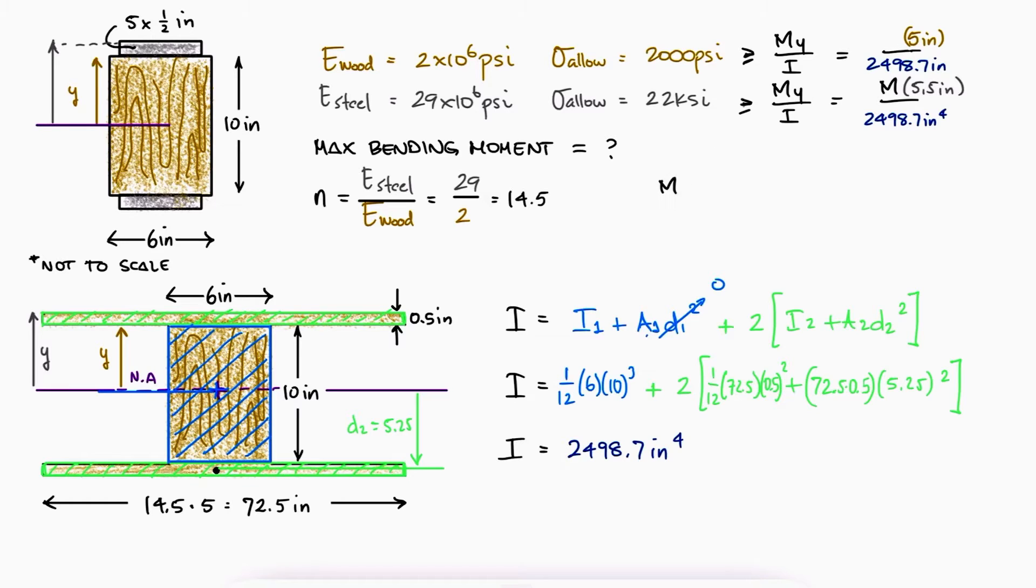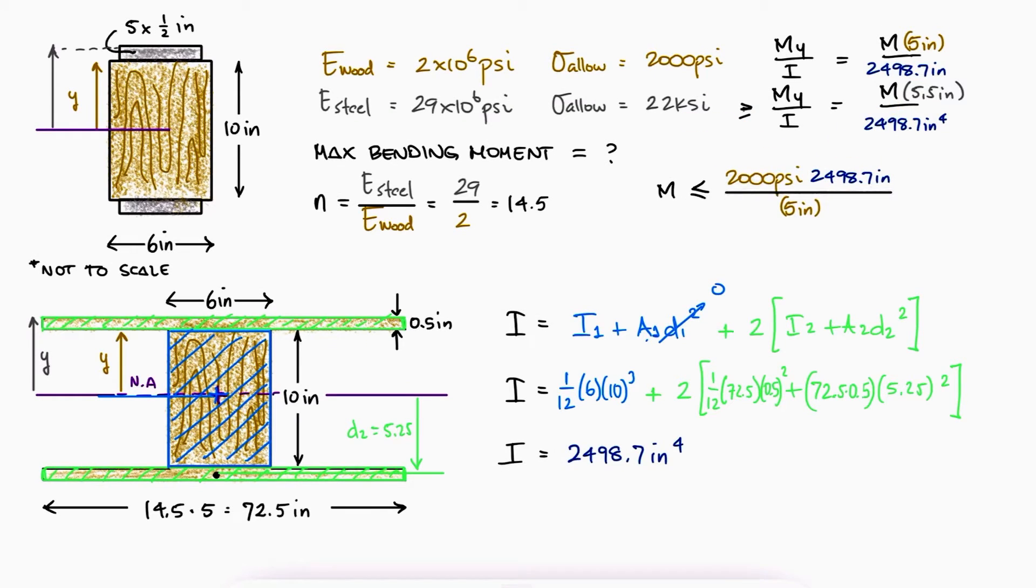Solving for the moment with the maximum allowable stress in the wood, we see that the maximum moment for the wood not to fail is 999 kip inches.